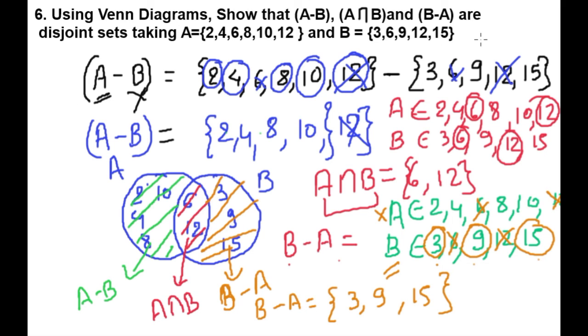Our question was to show that these are all disjoint sets. These sets are all different - nothing is common between them. So we can prove by Venn diagram that all these sets are disjoint.